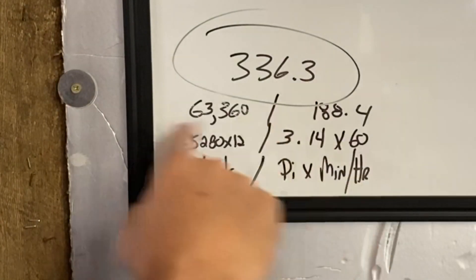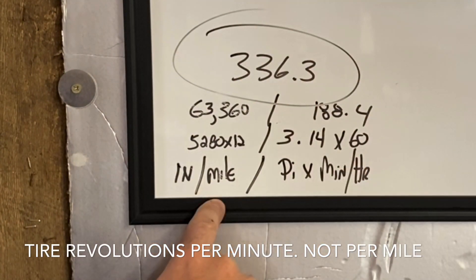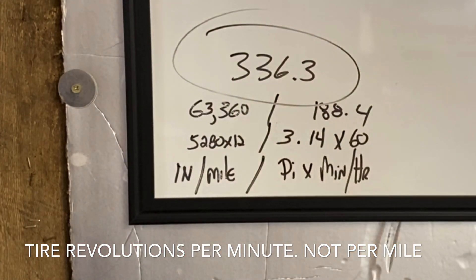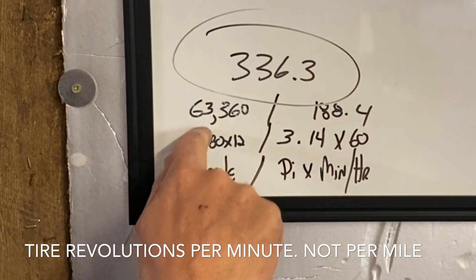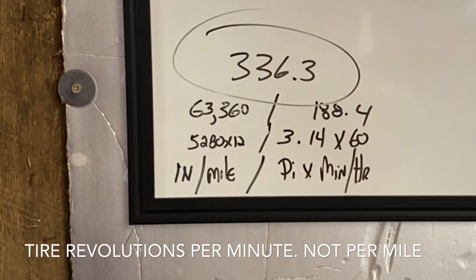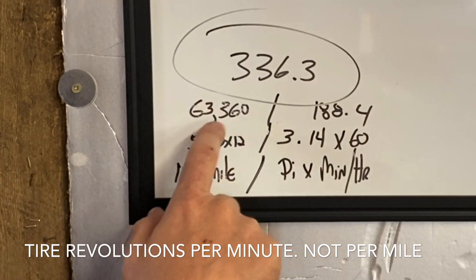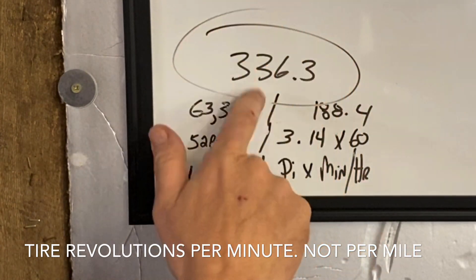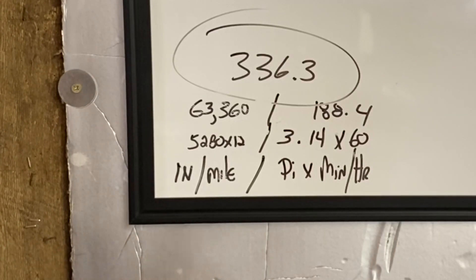What we are trying to determine is how many revolutions per mile the tire is going to make. We're taking inches per mile times pi times minutes in an hour to come up with this constant factor. Inches per mile: 5,280 feet in a mile times 12 gives us 63,360 inches in a mile. Pi times 60 gives us 188.4. We divide 63,360 by 188.4 — that's rotations per minute per hour — and that gives us 336.3. So that's where our number 336 comes from, and it is a constant used in the equation.